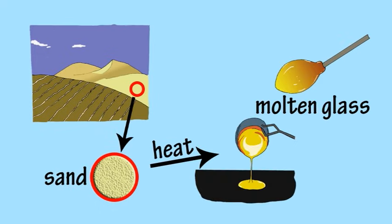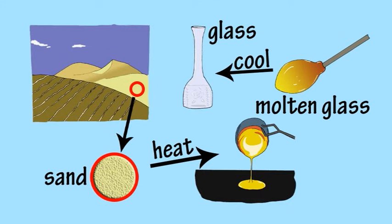A similar thing happens with sand. If it is heated to very high temperatures, it will turn into molten glass. And when this is cooled down, it turns into the hard material we know as glass.